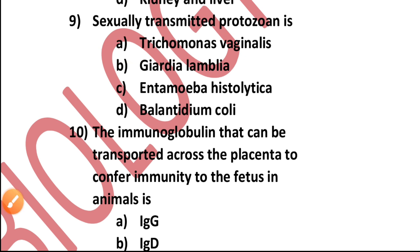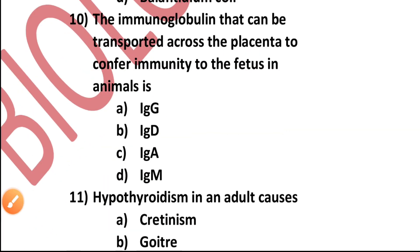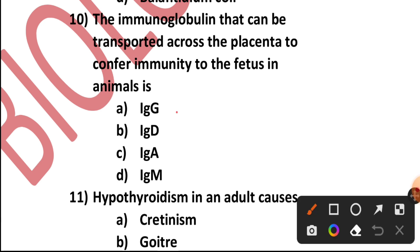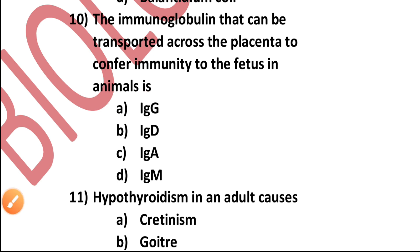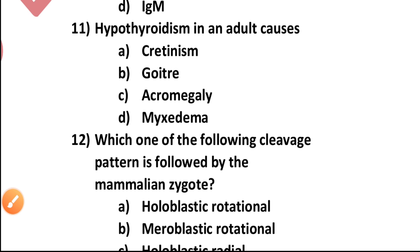Question number ten: The immunoglobulin that can be transported across the placenta to confer immunity to the fetus is — IgG, IgD, IgA, or IgM? It is IgG. This is a very common exam question. It is very important to know the significant characteristics and functions of IgG, IgD, and IgM for the exam.